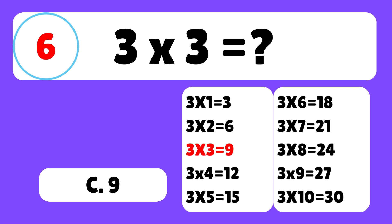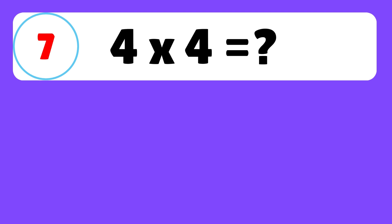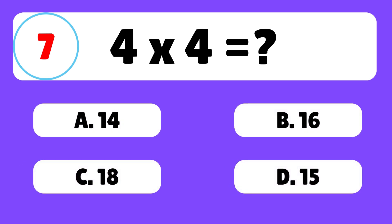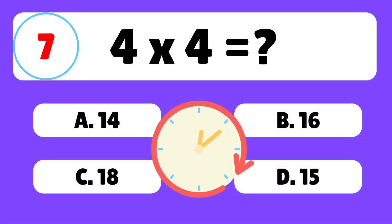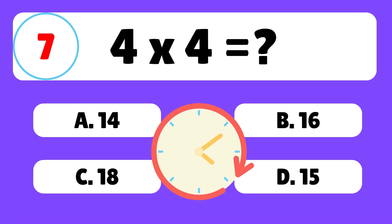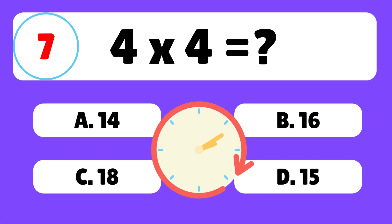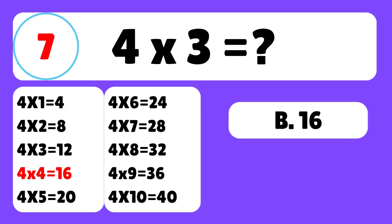Question 7. What is 4 times 4? The answer is B. 4 times 4 is equal to 16.